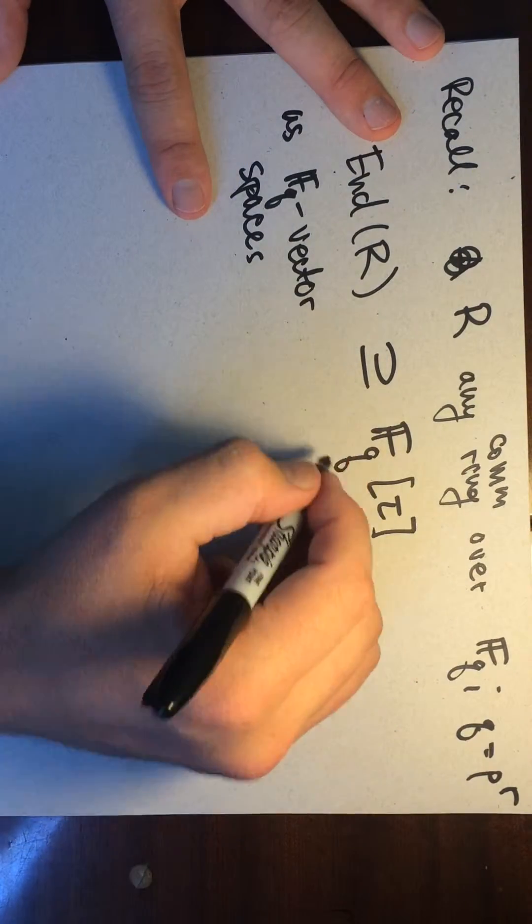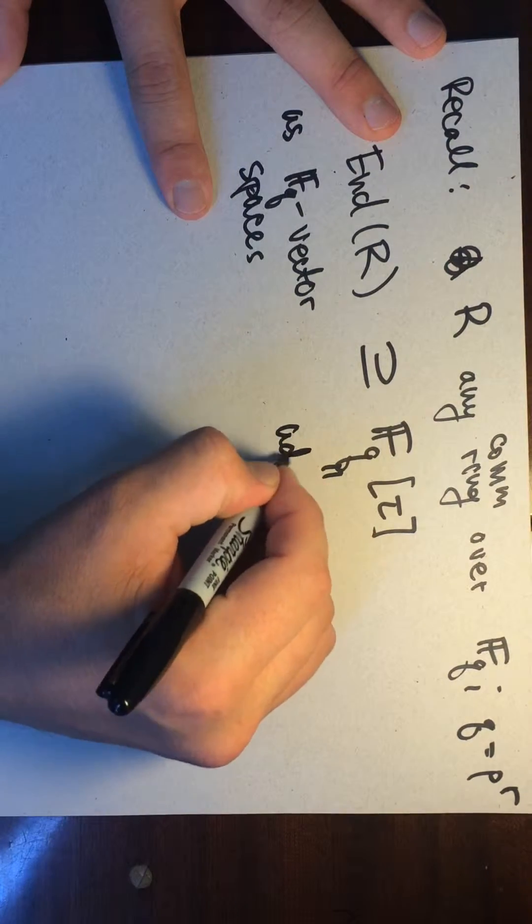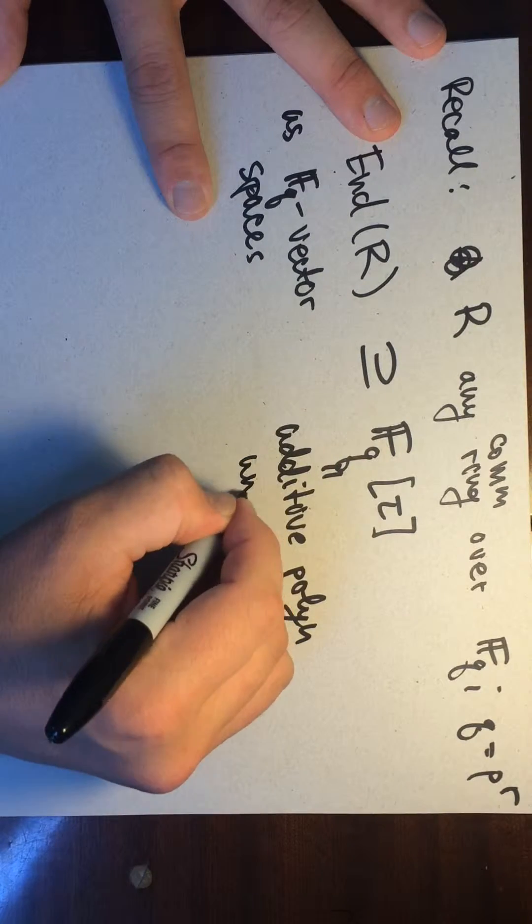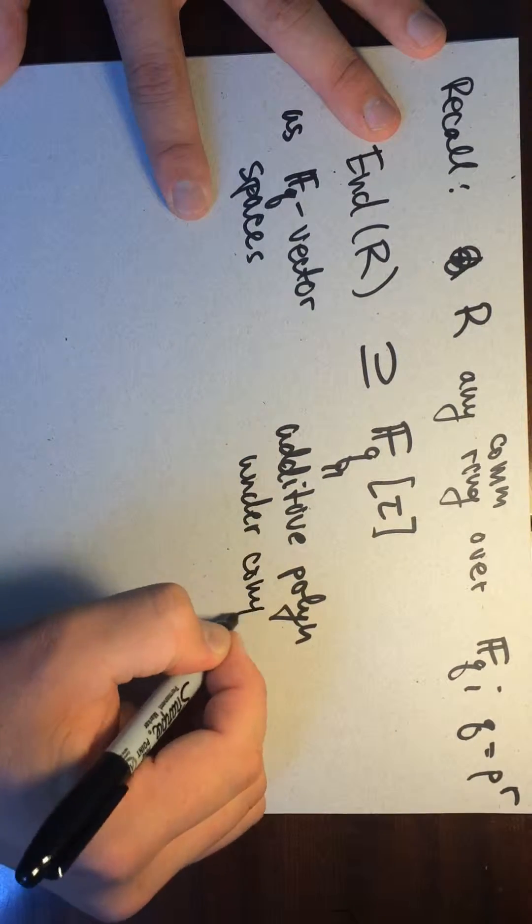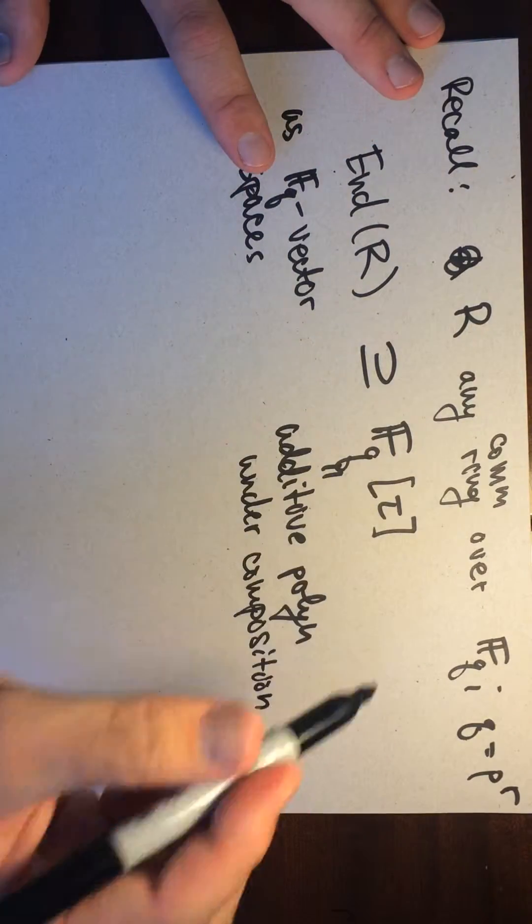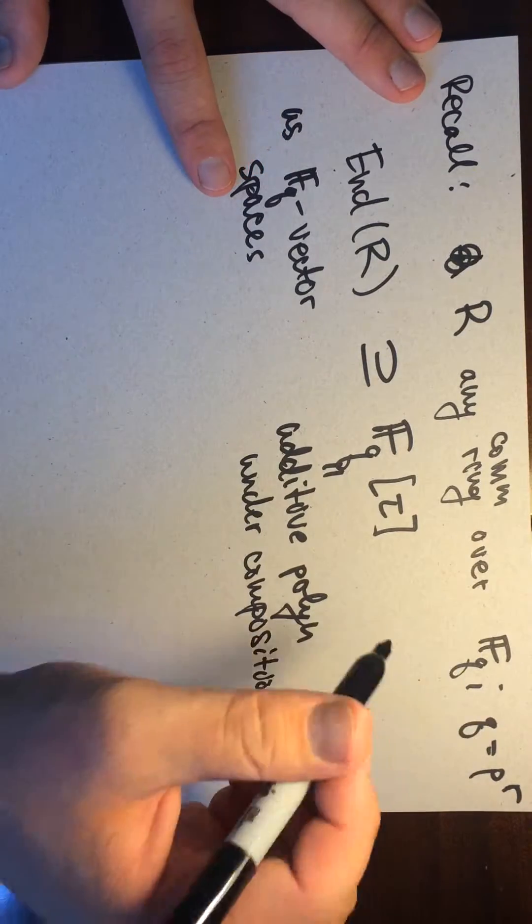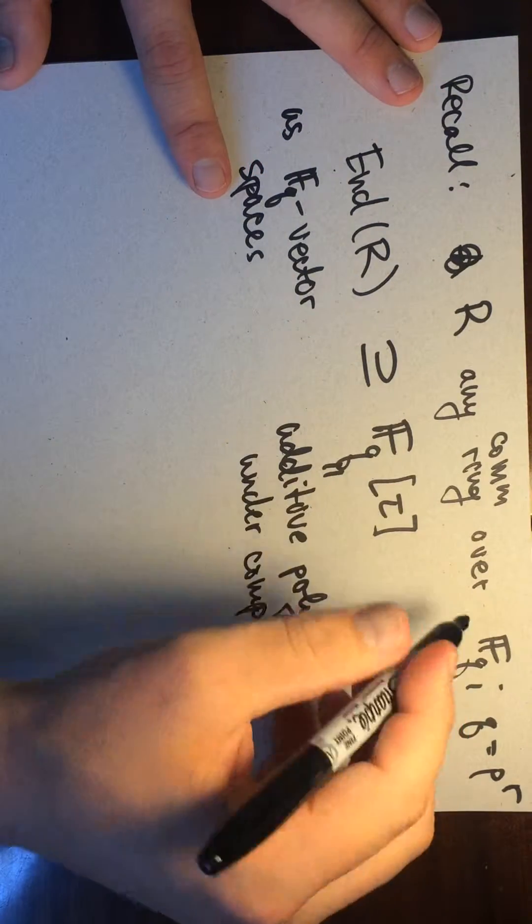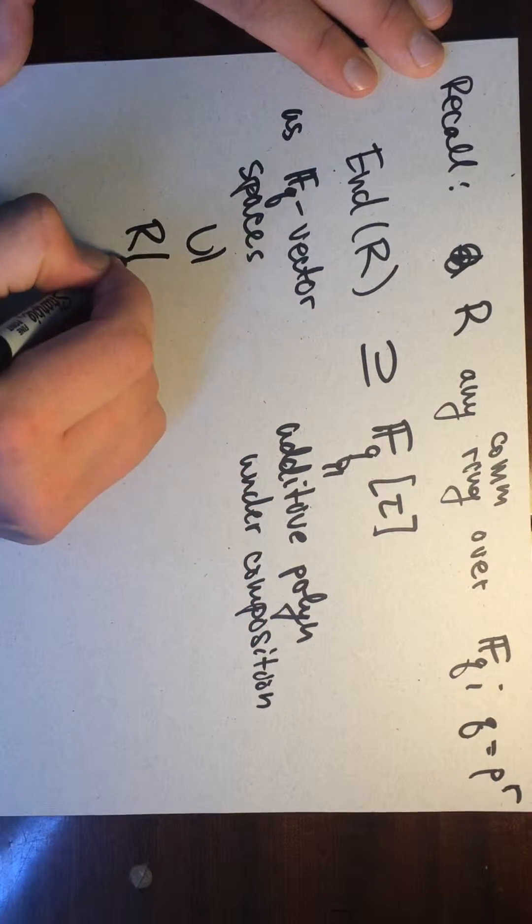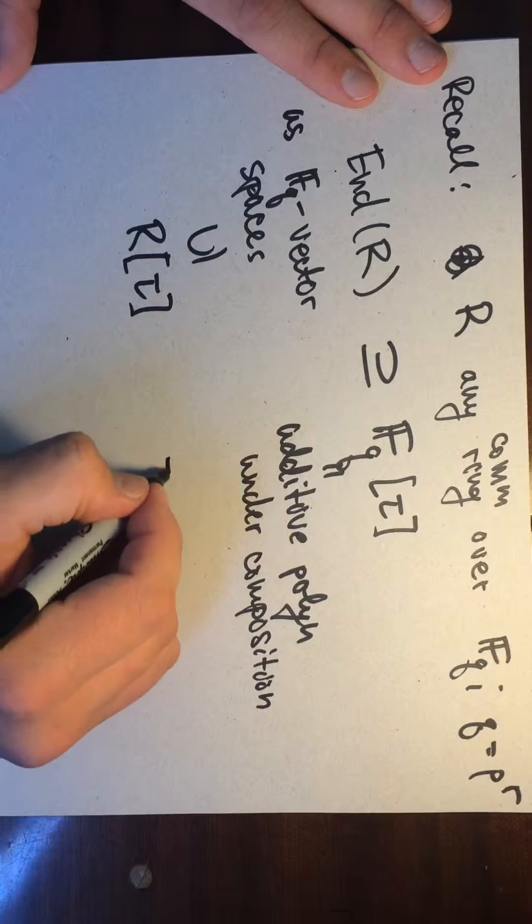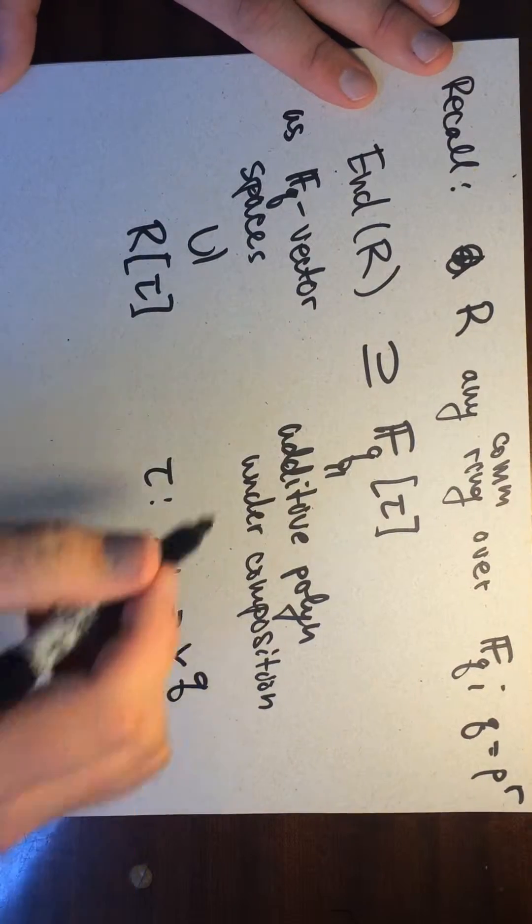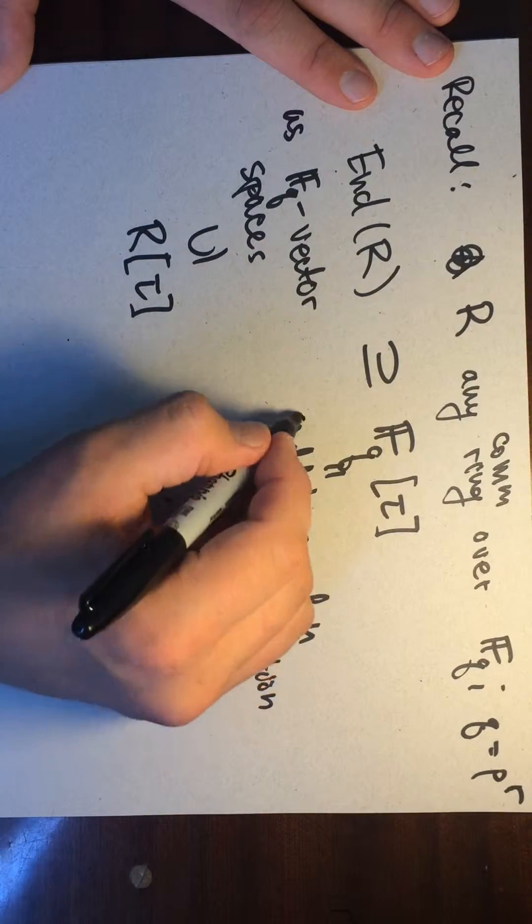So these are additive polynomials under composition. So actually, we can make this even bigger. We can say that this thing contains, so this could be a non-commutative ring, or this thing also contains here R[tau], like so. Here again tau is this map, X maps to X to the Q. So these are additive polynomials.